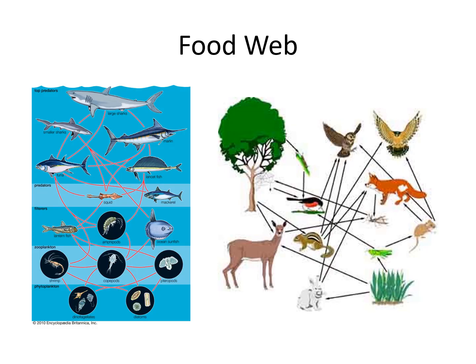A food web is multiple food chains put together. In order to have a healthy ecosystem, you want lots of organisms in your food chain. We've got one in the ocean and a forest food web here that shows multiple food chains — like grass to grasshopper to robin to owl, or grass to rabbit to fox and so on. That's a bunch of food chains put together to make a food web.